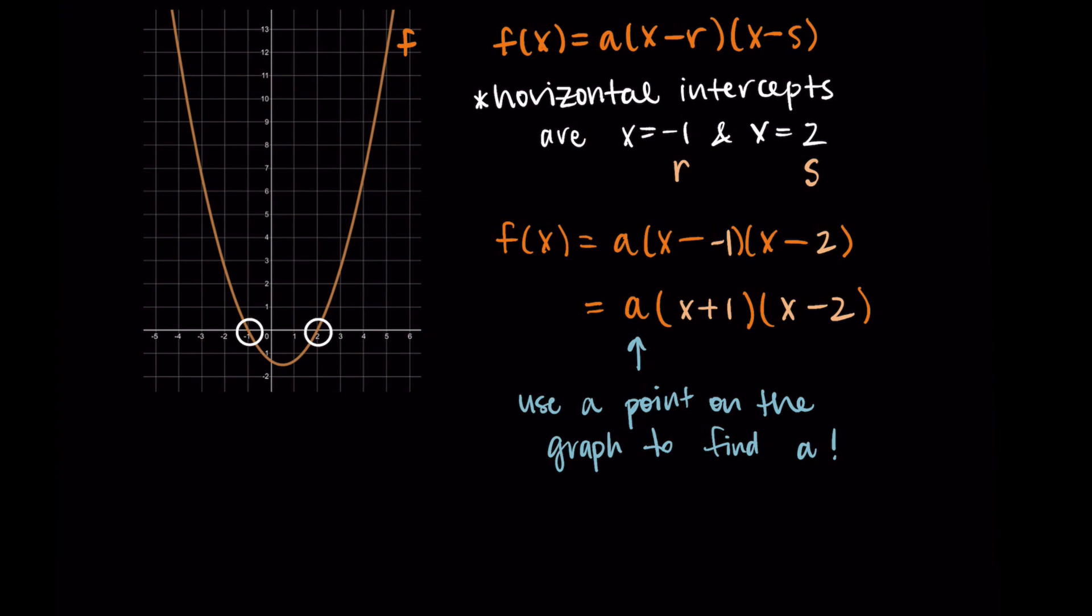So a is some value, we just don't know what it is yet. So we want to take a point that we can see on the graph and use it to help us find it. So you could choose any point you can clearly see. For me, I think the closest one is actually (5, 12). You could maybe do (-4, 12), but I'll stick with (5, 12).